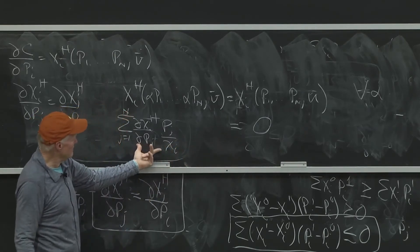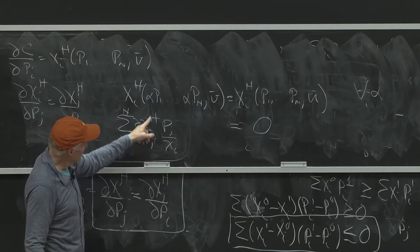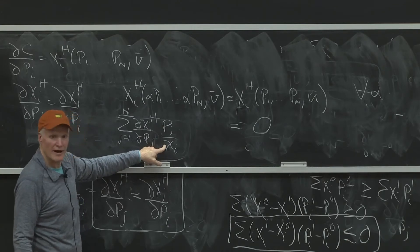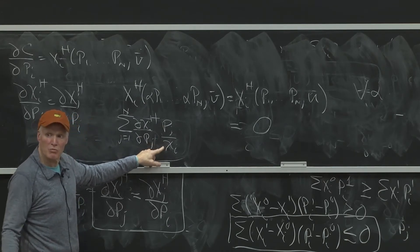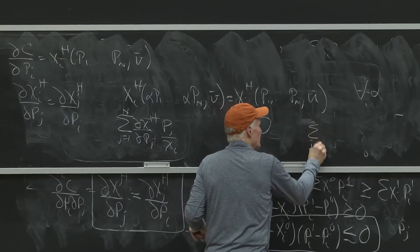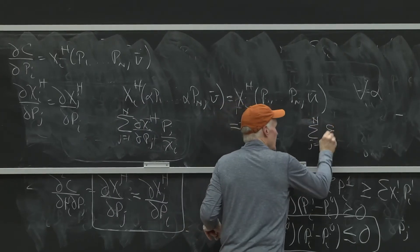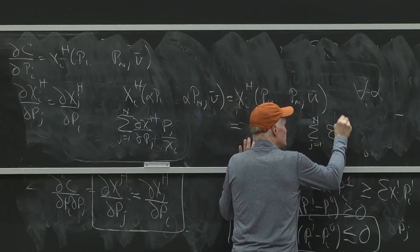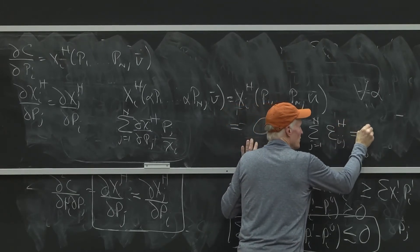What is partial xih partial pj times pj over xi? That's the cross price elasticity. That's epsilon sum j equals 1 to n of epsilon ijh equals zero.